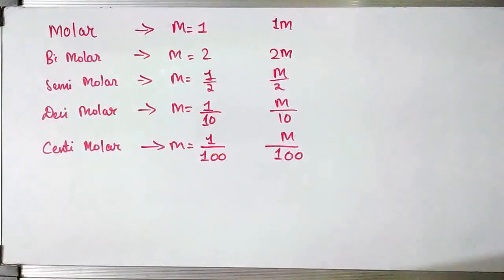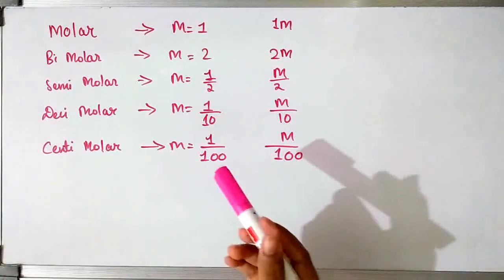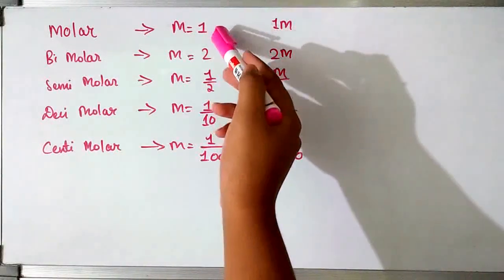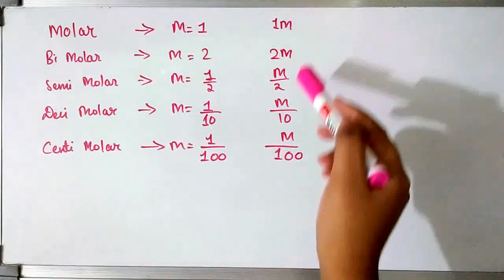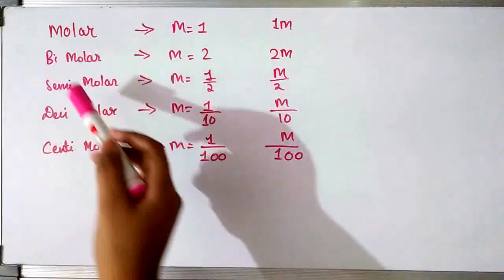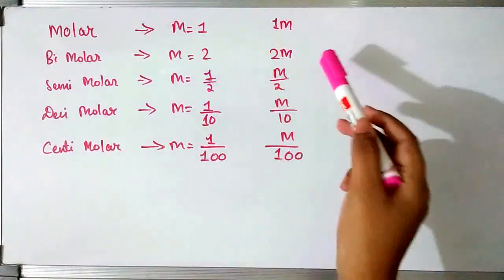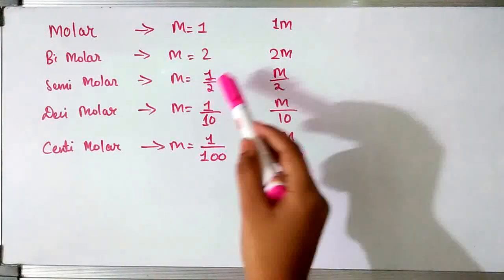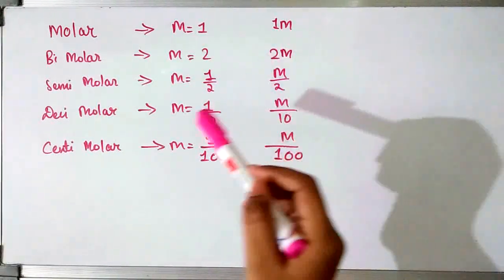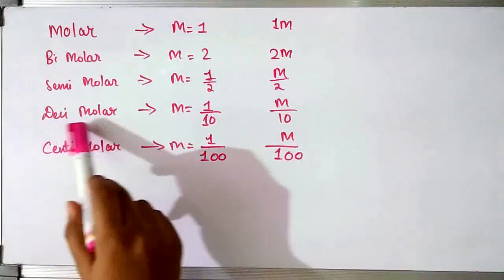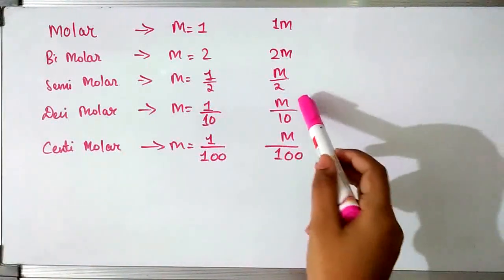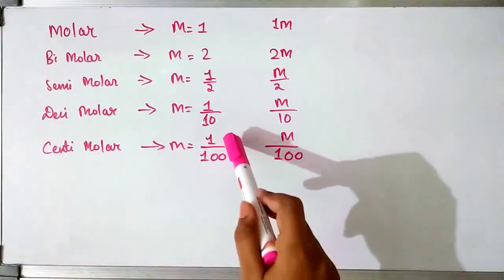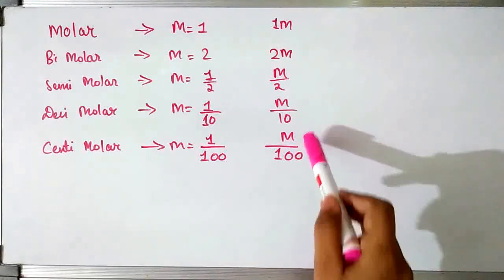Before we move on to the next questions, let's understand some terms. If they give you 'molar', it means molarity is 1M. 'Semi-molar' means the molarity is 1 by 2, symbol M by 2. 'Decimolar' means the molarity is 1 by 10, symbol M by 10. 'Centimolar' means the molarity is 1 by 100, symbol M by 100.